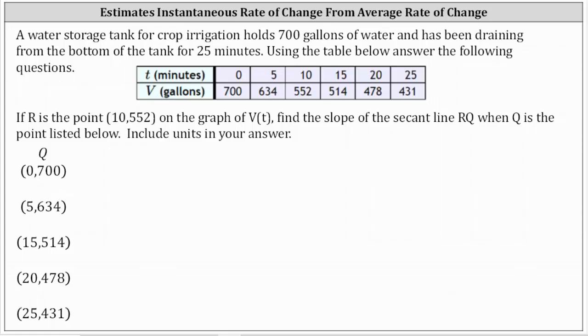A water storage tank for crop irrigation holds 700 gallons of water and has been draining from the bottom of the tank for 25 minutes. Using the table below, answer the following questions.